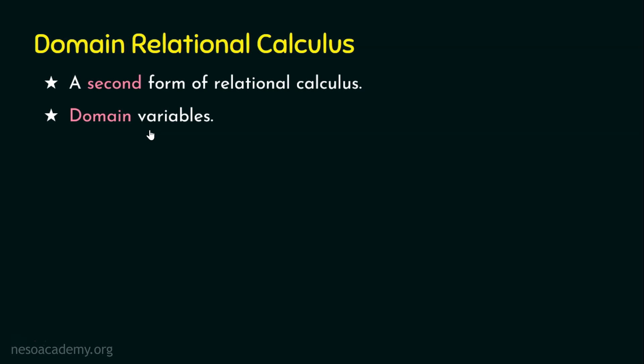Both tuple relational calculus and domain relational calculus are closely related to each other. The only difference is that in tuple relational calculus we use tuple variables for fetching data tuple by tuple — row by row — whereas here we are going to retrieve data attribute by attribute by setting domain variables.